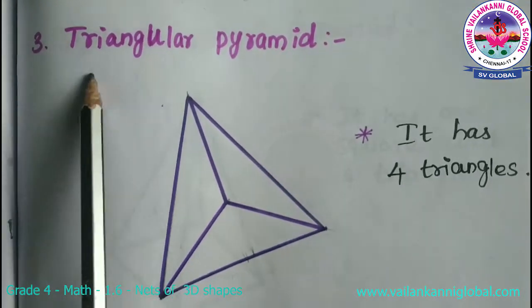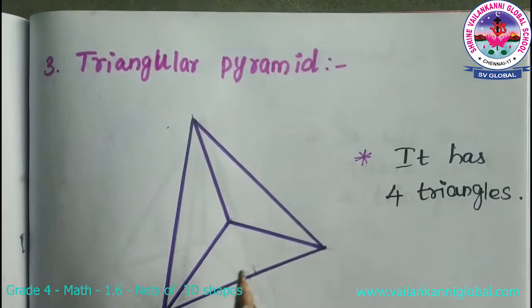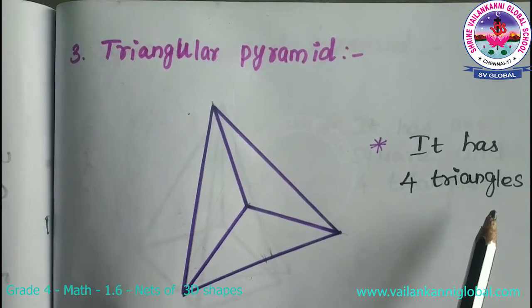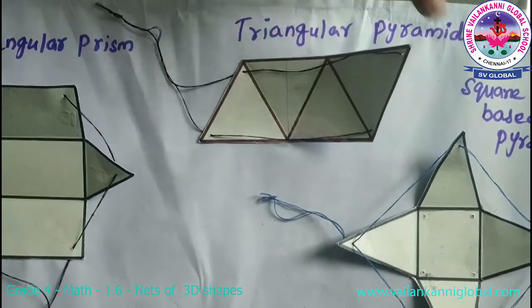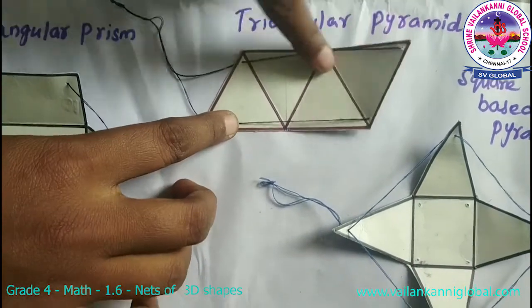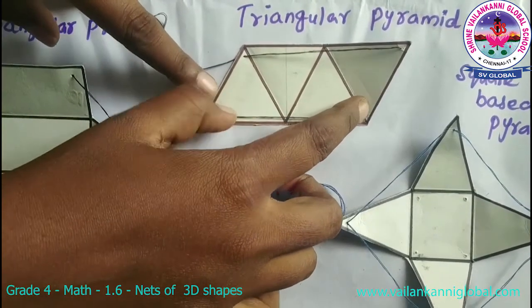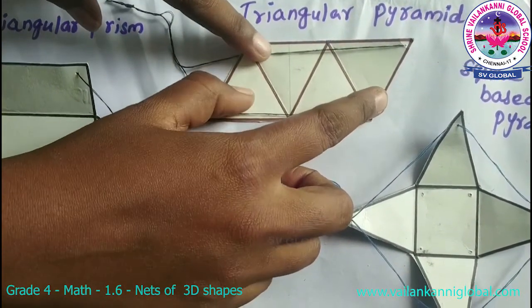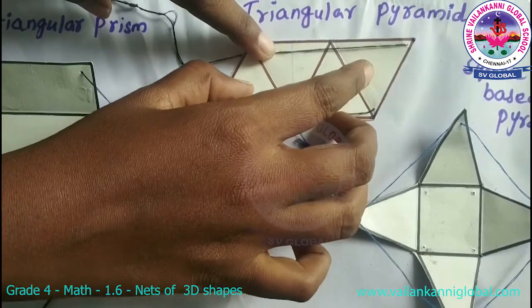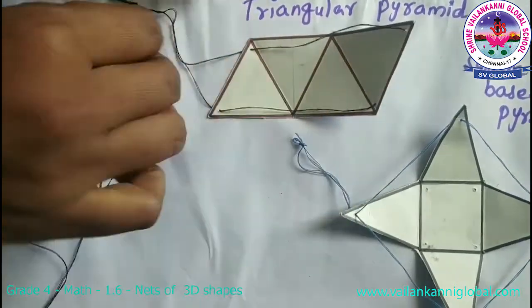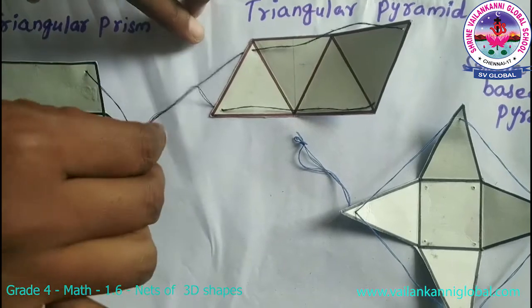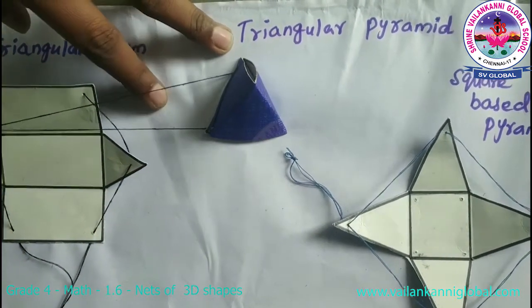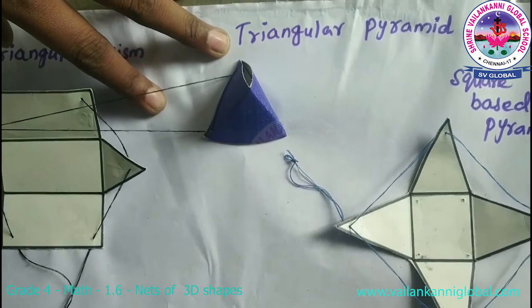The next one is triangular pyramid. For this triangular pyramid, it has four triangles. This is the net of triangular pyramid — here totally four triangles are there: one, two, three, four. Now we will make a triangular pyramid with that net. See, this is a model of triangular pyramid.